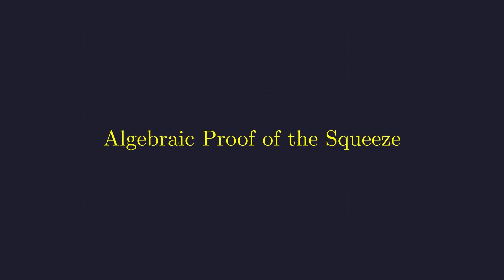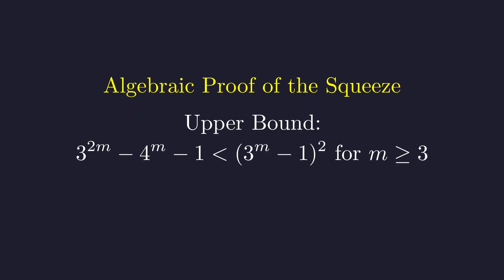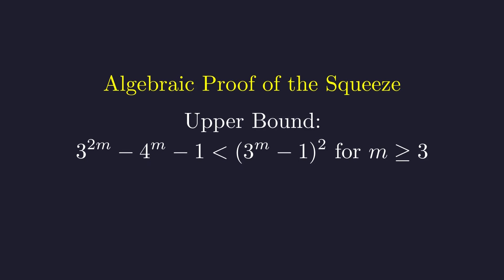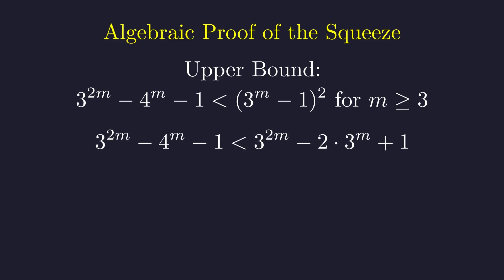Let's formally prove the inequalities that the graph suggests. First, we prove the upper bound. We need to show our expression is strictly less than the square of 3 to the m minus 1 for m greater than or equal to 3. Expanding the right side and cancelling the square of 3 to the m term, and rearranging, we get the same inequality we already proved is true for m greater than or equal to 3. The upper bound holds.